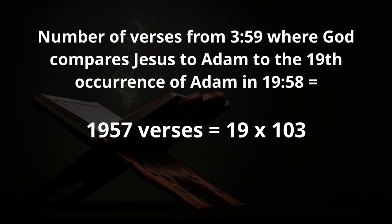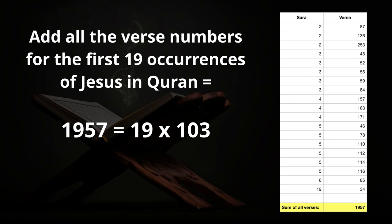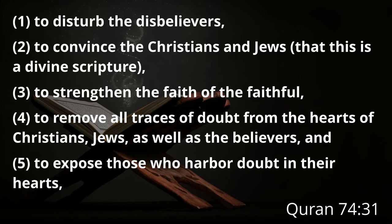If you add up the verses where Jesus is mentioned across his first 19 occurrences, you also get 1,957. These could be called coincidences, but the purpose of the mathematical miracle is to strengthen the faith of the faithful, to convince Christians, Jews, and believers that this is a book written by the Lord of the universe to humankind. We have the proof needed for anyone who seeks the truth to realize this is a divine scripture sent to Christians, Jews, believers — everyone in the world — to show God's true message to humankind. Please send comments and questions to korantalk@gmail.com. Until next time, peace and God bless.